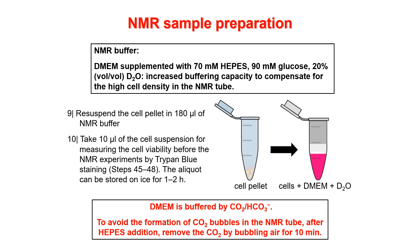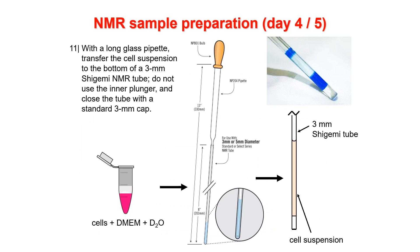Now that the buffer is ready, we resuspend the cell pellet with 180 microliters of NMR buffer, pipetting slowly because cells don't like to be pipetted too quickly as that would kill them. Before putting them in the NMR tube, we take 10 microliters of this cell suspension to measure cell viability by trypan blue, and this aliquot can also be run on a gel to check protein levels by SDS-PAGE. Then you transfer the remaining suspension to the NMR tube.